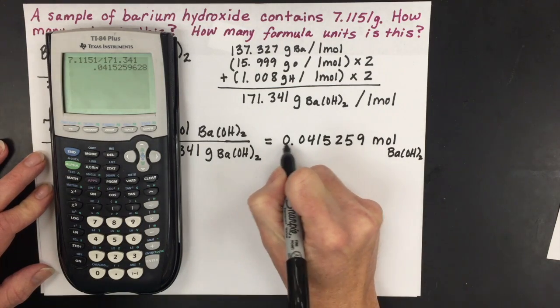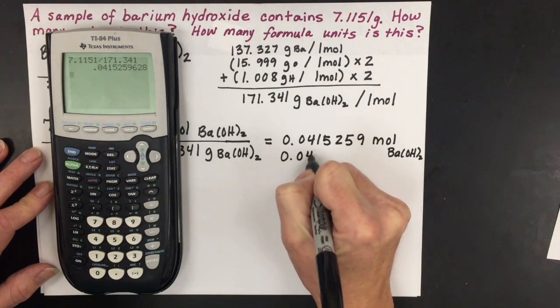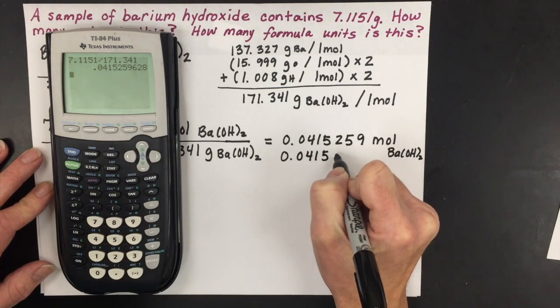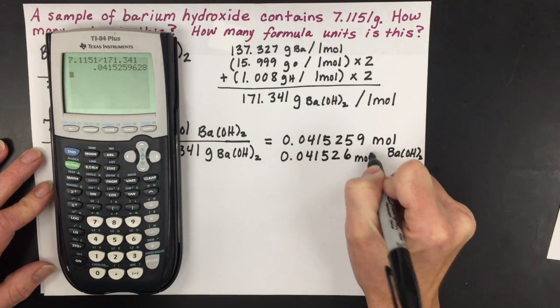These two zeros do not count. They're leading zeros. So 4, 1, 5, 2, and then you have to round to 6, and that gives you five significant figures.